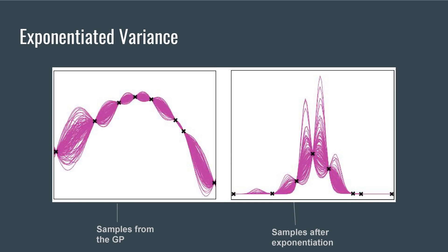The figure on the left has samples drawn from the GP uncertainty models. The right figure has the same samples after exponentiation. After exponentiation, high variance in the low likelihood regions are squashed and low variance in the high likelihood regions are blown up.